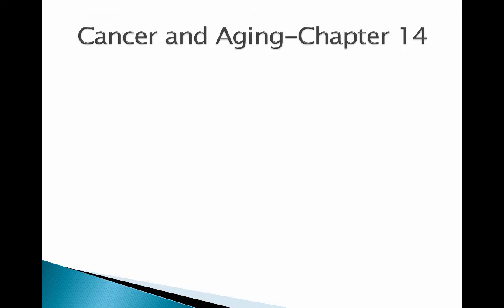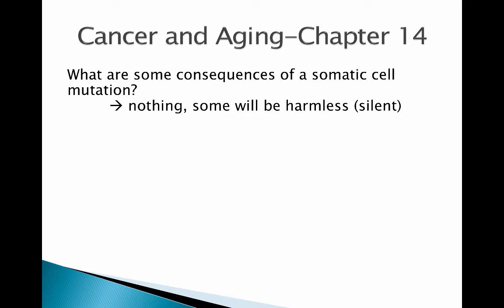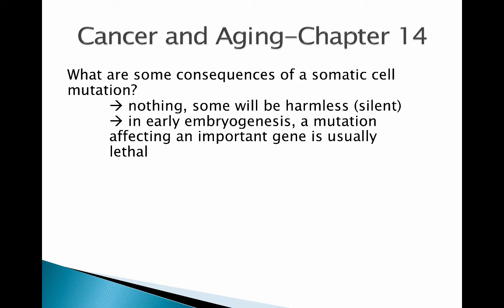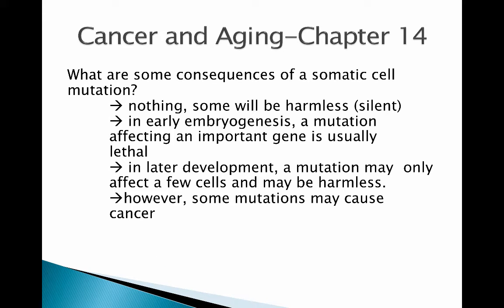What are some consequences of a somatic mutation? A lot of times nothing happens — it's a perfectly harmless, silent mutation. If a mutation happens early in embryogenesis in an important gene necessary for life, it's usually lethal and the embryo won't develop. Later in development, a mutation may only affect a few cells or be harmless. However, some mutations — even those occurring when you're 60 years old — can cause cancer.